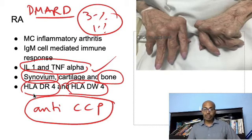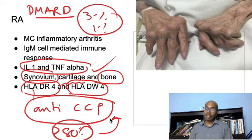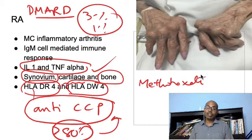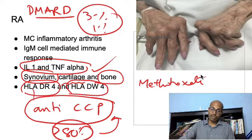RA factor is positive in only 80% of patients and is not as specific or sensitive as anti-CCP. Once you diagnose rheumatoid arthritis, you start the patient on a disease modifying drug. The most common first-line disease modifying drug is methotrexate. Second-line drugs include leflunomide, hydroxychloroquine, and multiple biologics — interleukin-1 inhibitors and TNF-alpha inhibitors. We will discuss this more in another video.